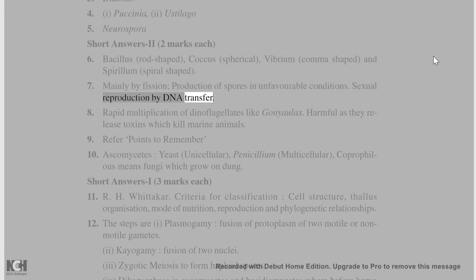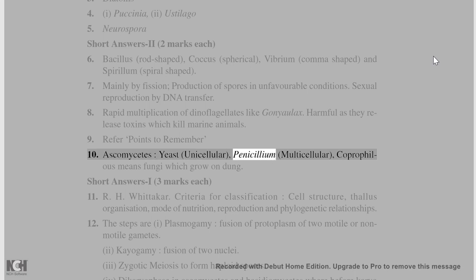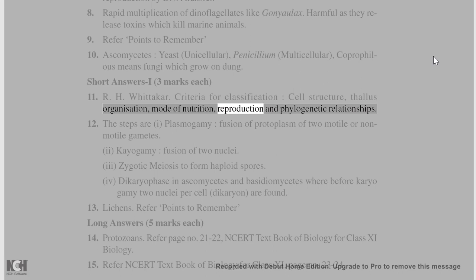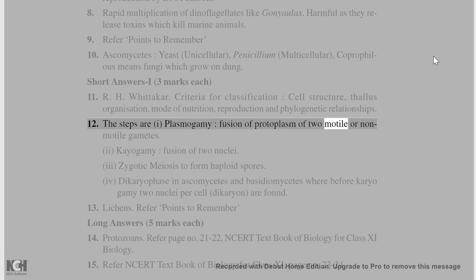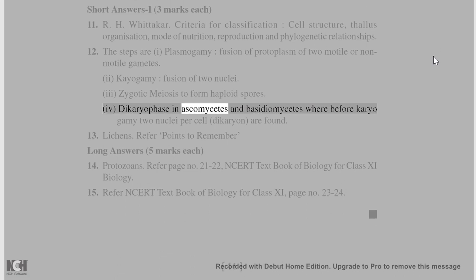Sexual reproduction in bacteria occurs by DNA transfer. 8. Red tides are caused by rapid multiplication of dinoflagellates like Gonyaulax, which release toxins that kill marine animals. 9. Refer to points to remember. 10. Ascomycetes — yeast (unicellular) and Penicillium (multicellular). Coprophilous means fungi which grow on dung. 11. R.H. Whittaker. Criteria: cell structure, thallus organization, mode of nutrition, reproduction, and phylogenetic relationships. 12. Steps in sexual cycle: (i) Plasmogamy — fusion of protoplasm of two haploid or non-haploid gametes; (ii) Karyogamy — fusion of two nuclei; (iii) Zygotic meiosis to form haploid spores; (iv) Dikaryophase in Ascomycetes and Basidiomycetes where two nuclei per cell (dikaryon) are found before karyogamy.